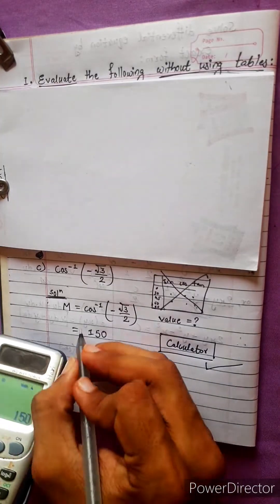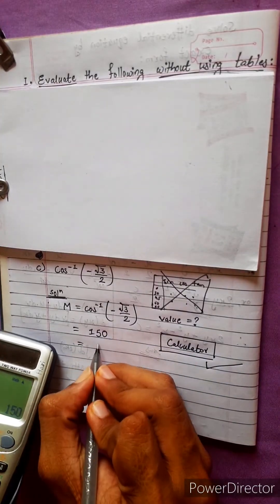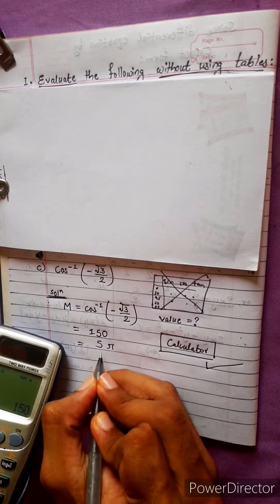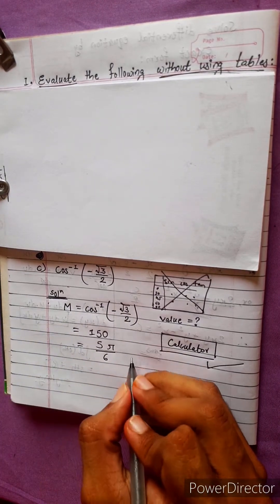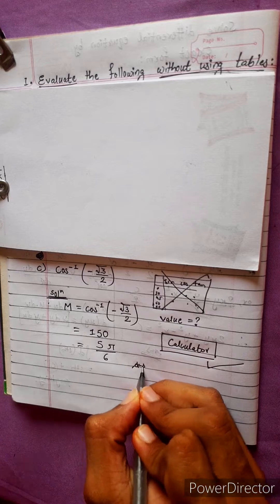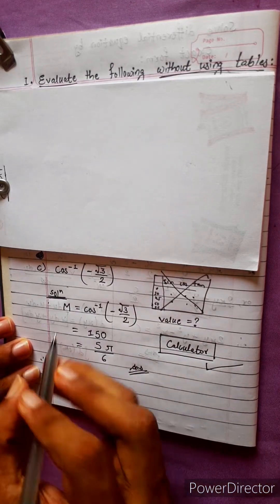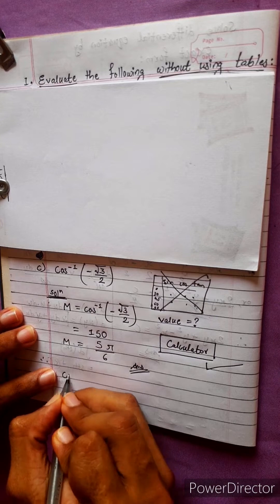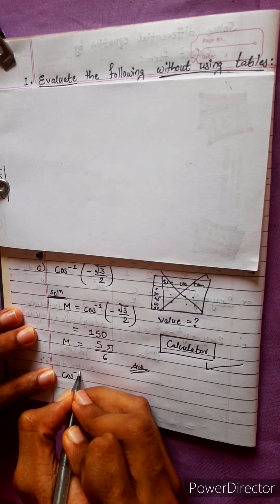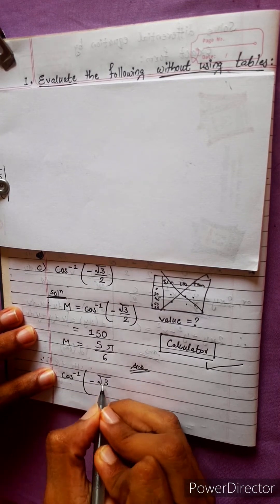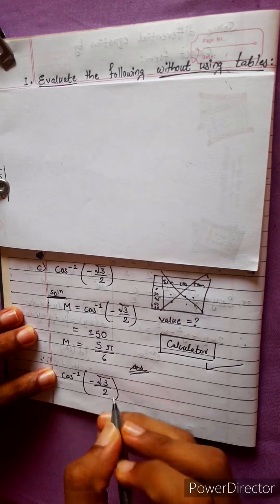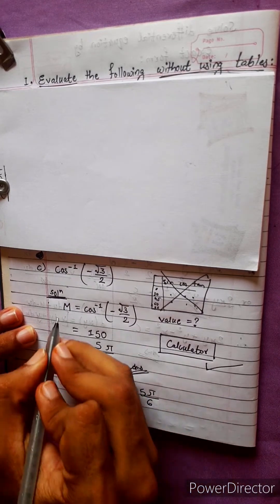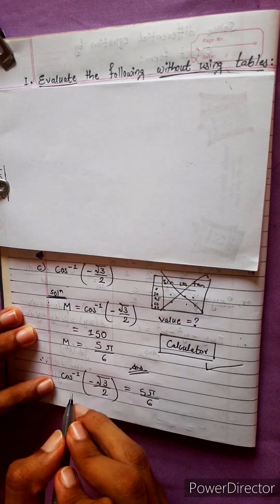So just reverse the process. This will be 6 over 5 divided by 6, which gives 5π/6. This is the answer. Therefore, m equals 5π/6. This is also m. Both expressions equal m — under root 3 over 2 equals 5π/6. This is also the m value.